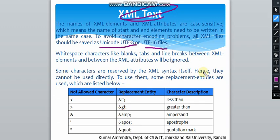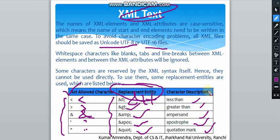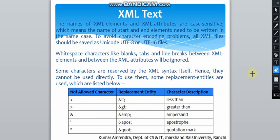These reserved characters cannot be used in XML text. The characters that are not allowed directly are: less than '<', greater than '>', ampersand '&', apostrophe/single inverted comma, and double inverted comma. Their replacements are: '&lt;' for less than, '&gt;' for greater than, '&amp;' for ampersand, '&apos;' for apostrophe, and '&quot;' for quotation. These are the XML text rules and they complete the XML syntax lecture. In the next lecture, we will go through XML documents and Document Type Declaration (DTD).